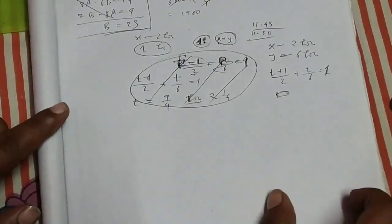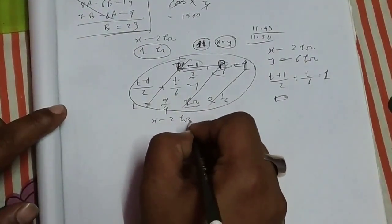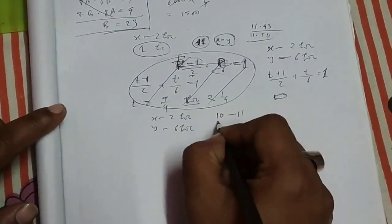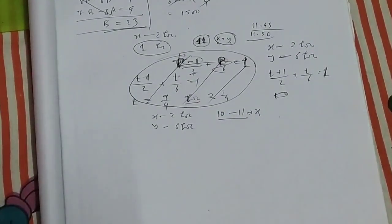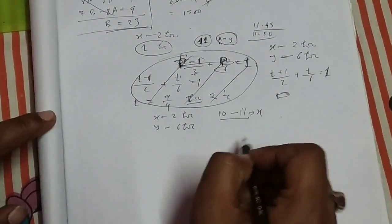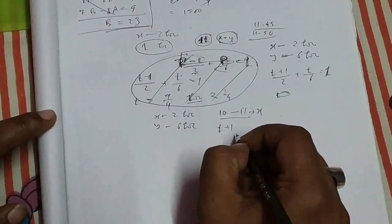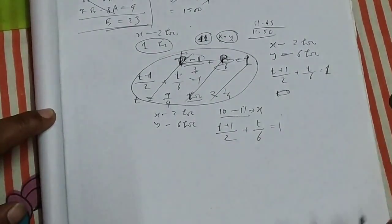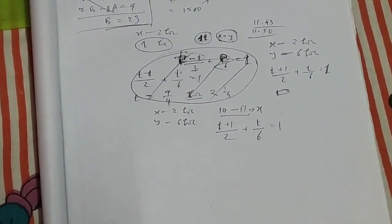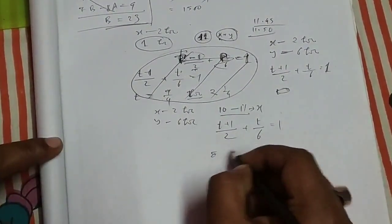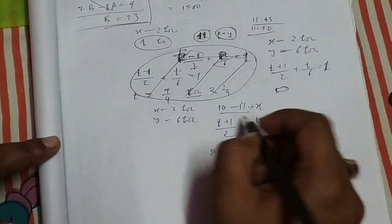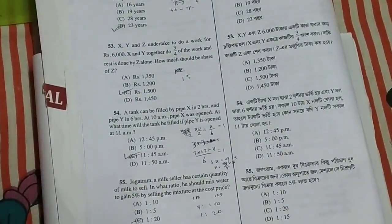X fills the tank in 2 hours and Y fills it in 6 hours. X starts at 10 a.m., one hour before Y. After 1 hour, X has done T plus 1 hours of work divided by 2, and Y does T divided by 6, together equaling 1. Solving, the answer is that the tank fills at 11:45 a.m.